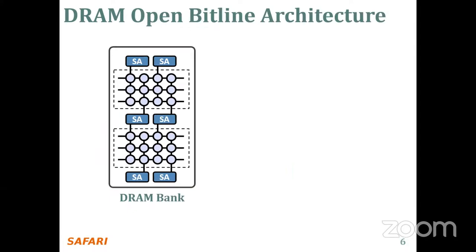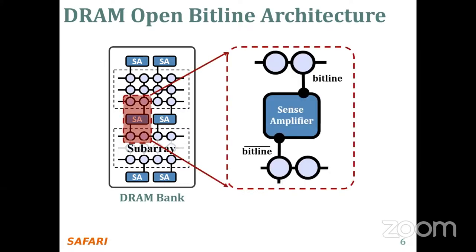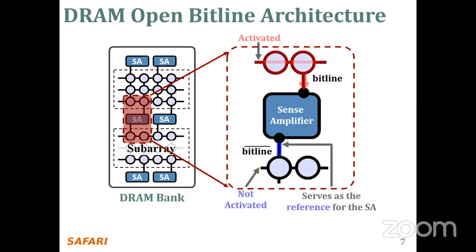To achieve high-density DRAM chips, open bit line architecture is widely adopted in modern DRAM modules. In this architecture, each subarray's bit lines are connected to two rows of sense amplifiers — one above and one below the subarray — and this results in neighboring subarrays that share common sense amplifiers. During an activation, the bit line in a neighboring subarray is also involved, and the bit line bar has a complementary voltage value due to sense amplifiers consisting of two back-to-back inverters.